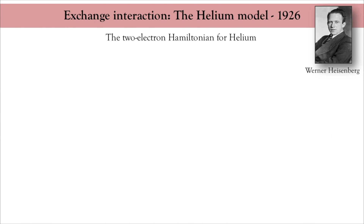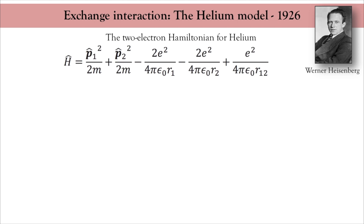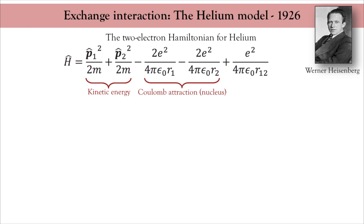Heisenberg exchange describes the interaction between two spins. To understand where it comes from, we consider the helium atom — a system of two electrons orbiting around the nucleus, studied by Heisenberg in 1926. The first two terms of the Hamiltonian describe the kinetic energy of each electron, the next two terms describe the Coulomb interaction between each electron and the nucleus, and the last term accounts for the Coulomb repulsion between the two electrons.